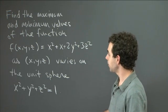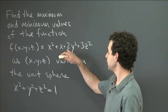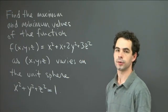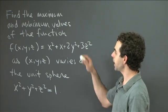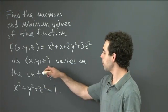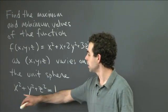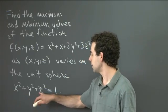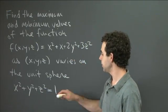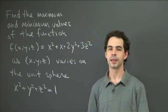So I've got a function f of x, y, z equals x squared plus x plus 2y squared plus 3z squared. And what I'd like you to do is find the maximum and minimum values that this function takes as the point x, y, z moves around the unit sphere x squared plus y squared plus z squared equals 1. So optimize this function given the constraint x squared plus y squared plus z squared equals 1.